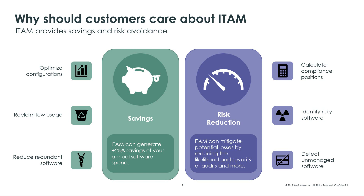For example, maybe you have Microsoft SQL Server and Oracle database software both deployed in your environment. Our system would be able to detect that we have two different products of database software, so we should consolidate them to get a better discount. The second capability spend detection offers is the ability to reinforce company purchasing policies and also to identify unmanaged software.